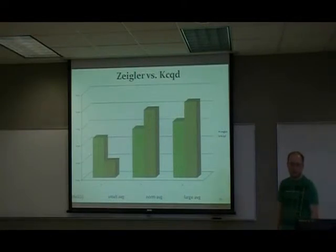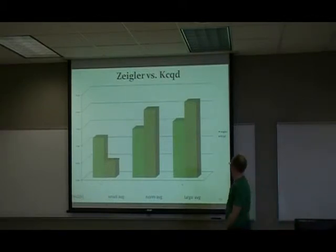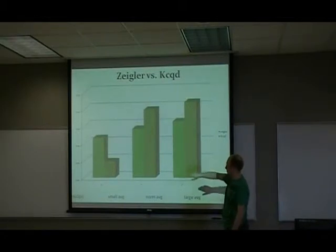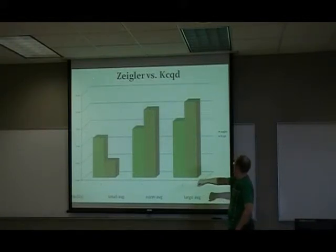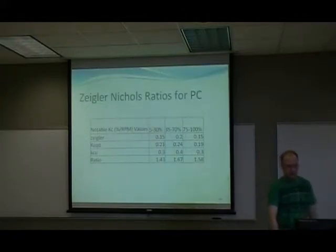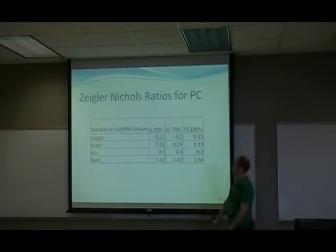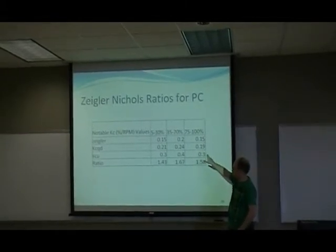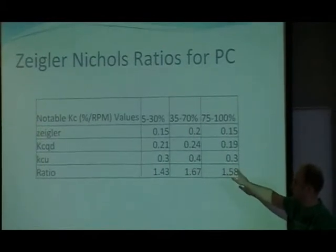This is a comparison of the tau ones versus the Ziegler-Nichols formula. You can see that Ziegler beats the small average, but for the normal and the large averages, the normal quarter decay beats it. And the Ziegler-Nichols ratio is for the proportional controller.